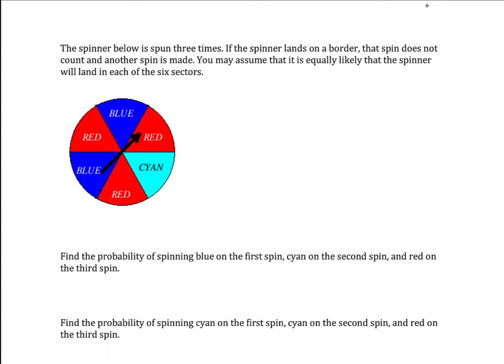So let's maybe make some notes here off to the side. We have six different regions that we can land in. Three of those are red. So the probability of red would be three over six, or we can change to one half.